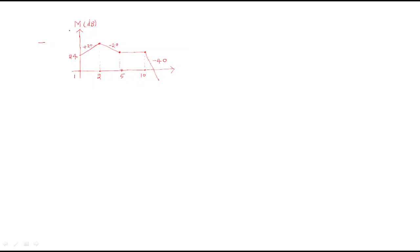The magnitude plot is given and the question is to find the transfer function. We can follow a shortcut method here. Looking at the plot, it starts at 24 dB, meaning we have a DC gain. Since the initial slope is +20 dB/decade, there must be a zero at the origin, so we have some K value with a zero at the origin.